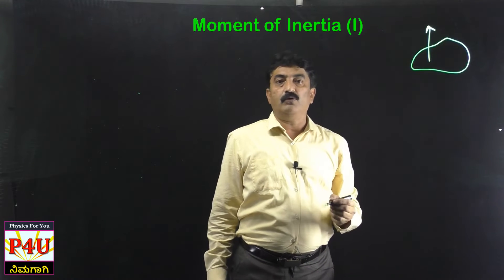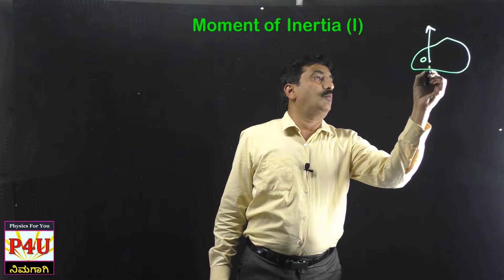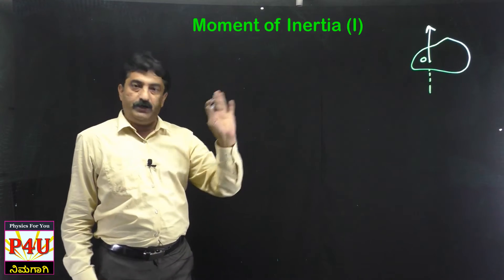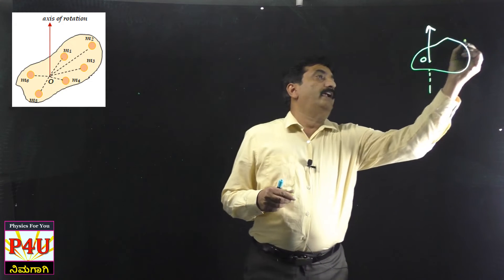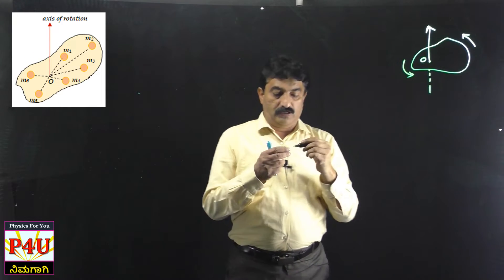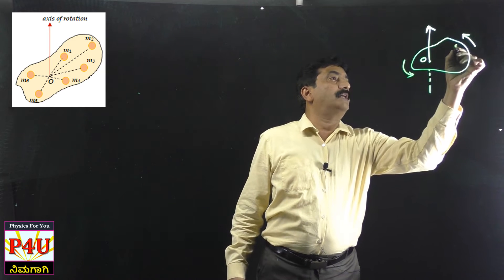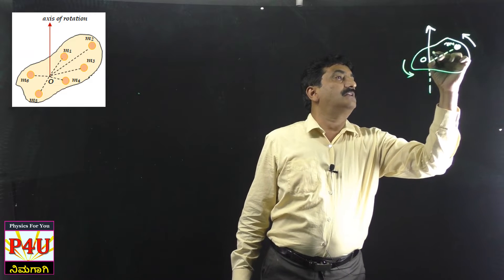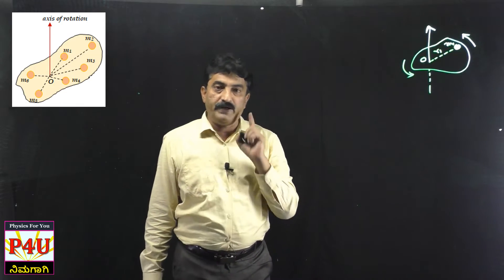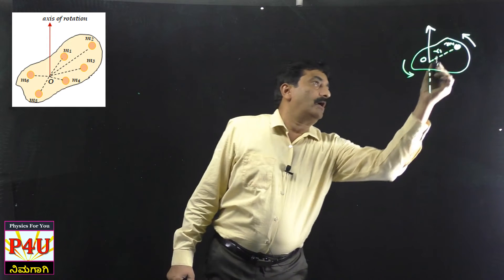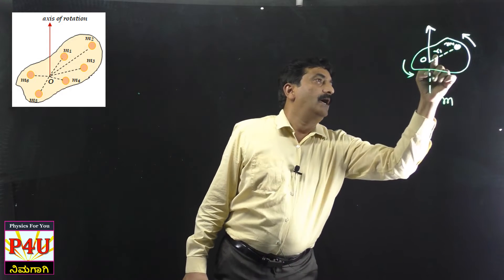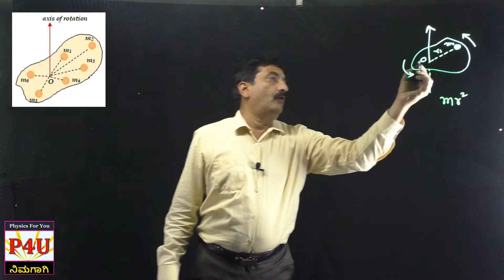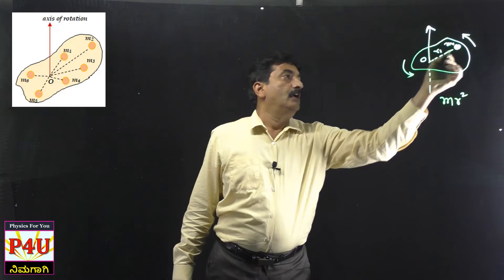It is assumed to be rotating about an axis passing through point O, which is the center of gravity or center of mass. It is rotating with a certain angular velocity. Now consider one small particle somewhere here of mass M1, at a distance R1. The definition of Moment of Inertia of this particle is the product of mass and the square of the distance from the fixed point where the axis of rotation passes to the particle.